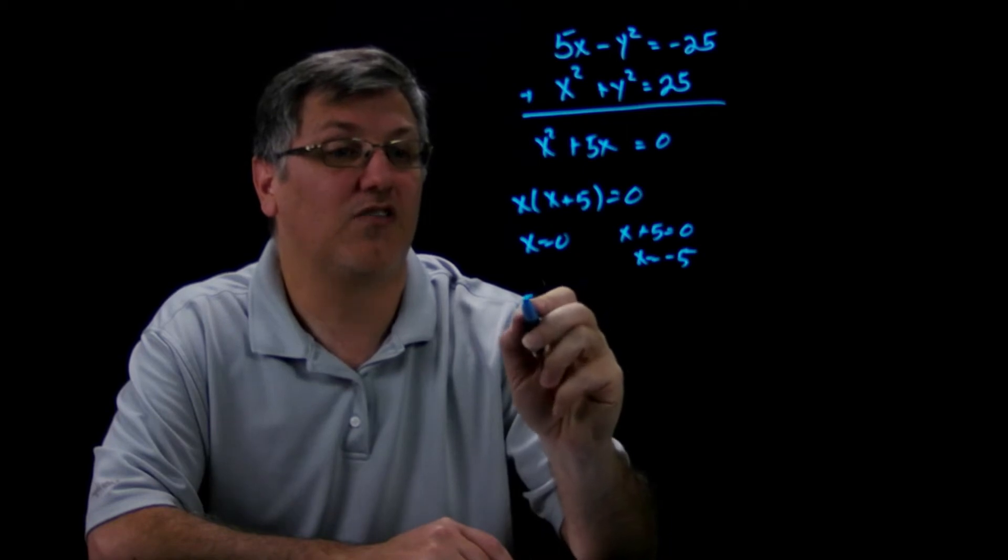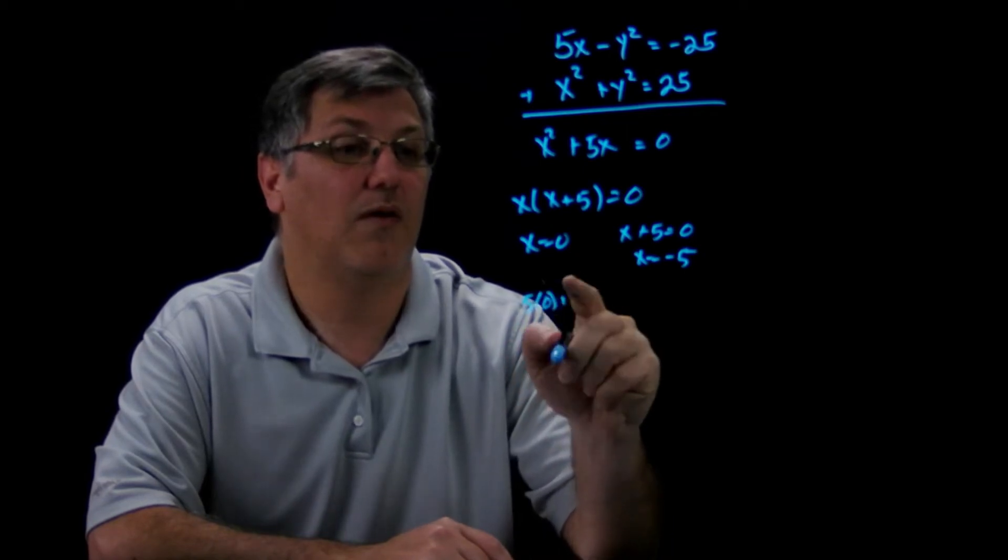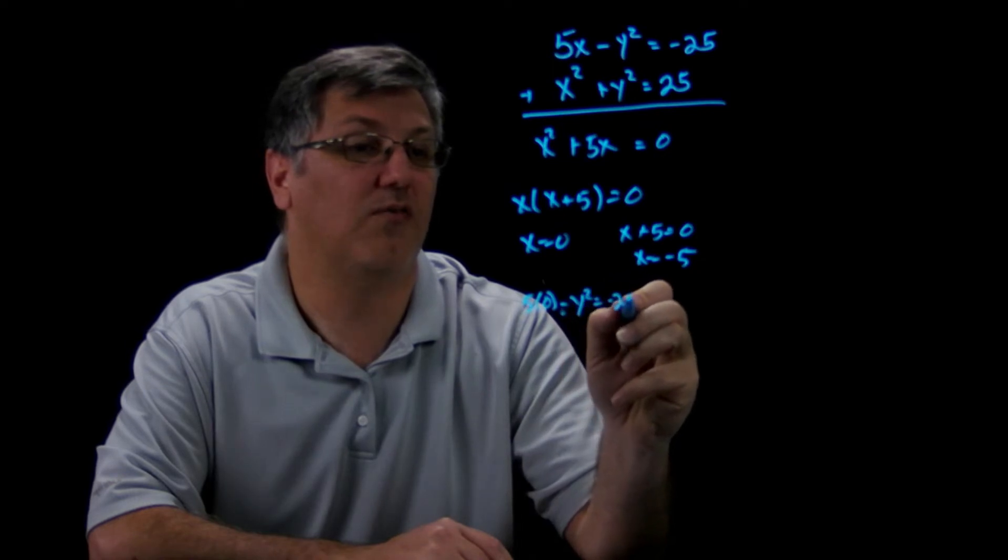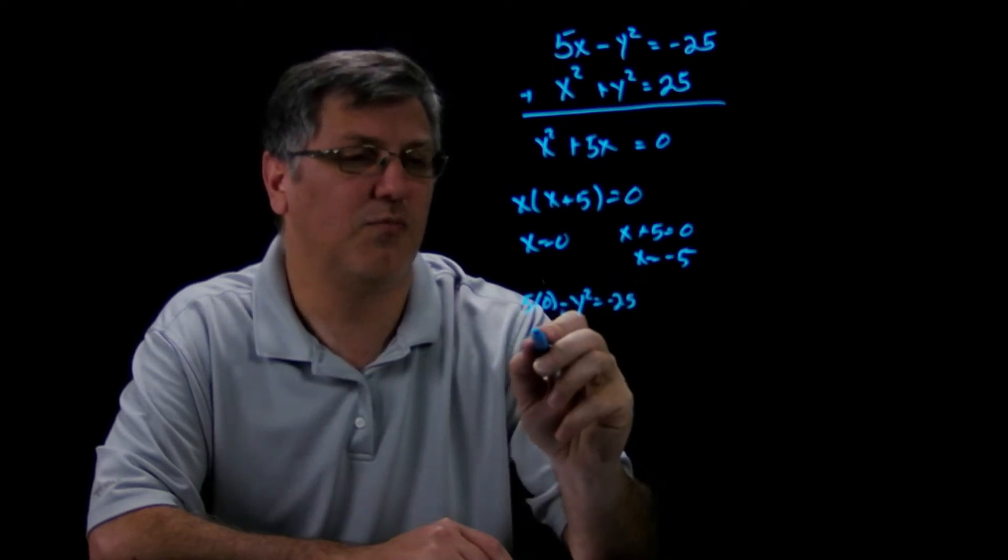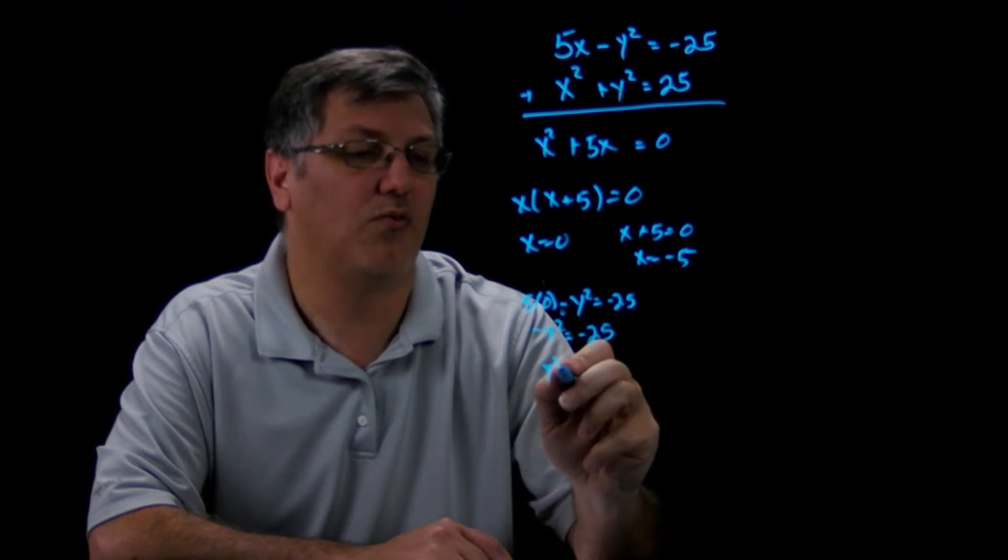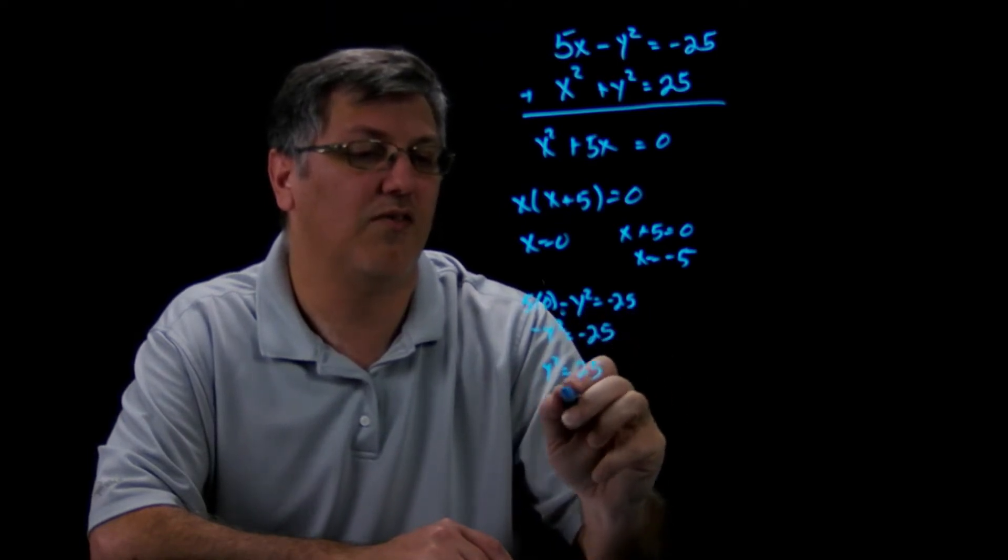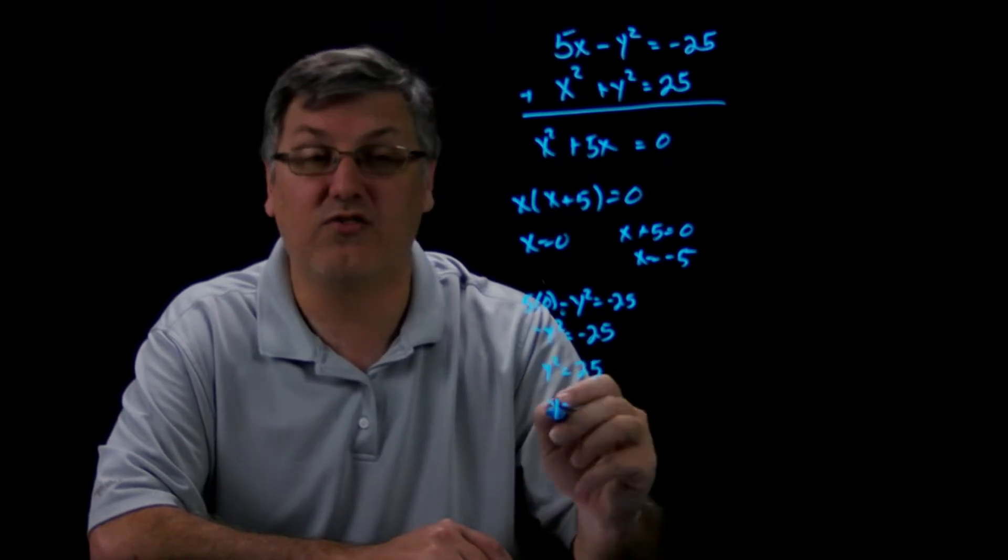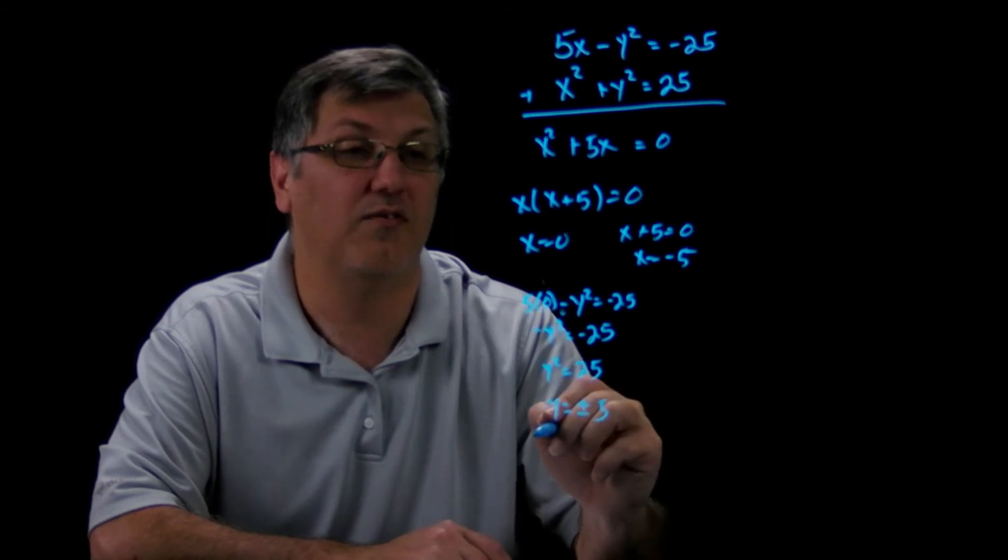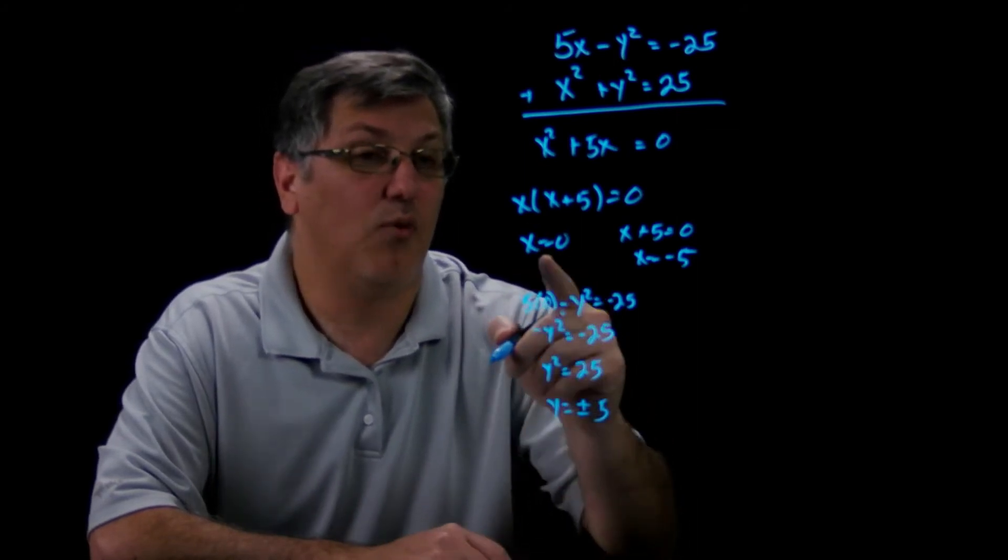I want to pick one of these equations to find the other value, so let's do the parabola—that makes life a little easier. So I can say 5 times 0 minus y squared equals negative 25. This gives me negative y squared equals negative 25, y squared equals 25. And of course then y, when you take the square root, you must remember your plus or minus, and the square root of 25 is 5.